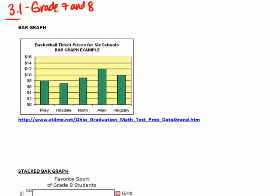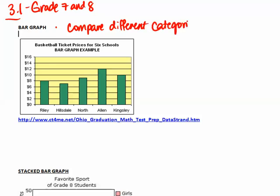The first graph we're going to look at is the bar graph. The main usage of a bar graph is to compare completely different categories. This means the categories can actually be mixed up or put in different orders, but there's no relationship between each of the categories except that they all fall under the same kind of genre.